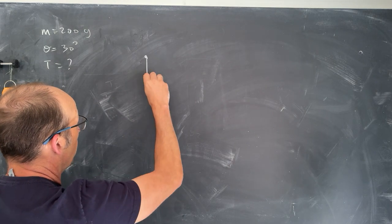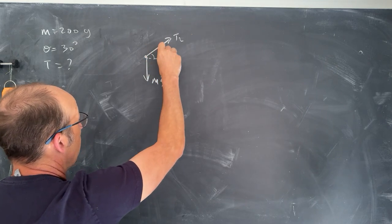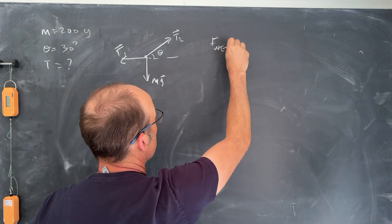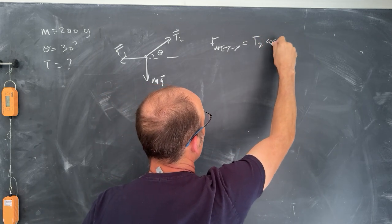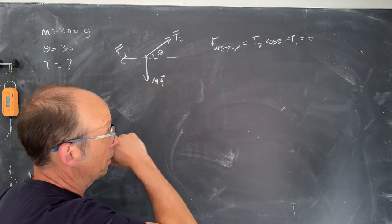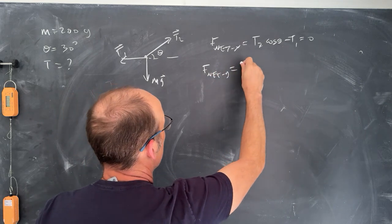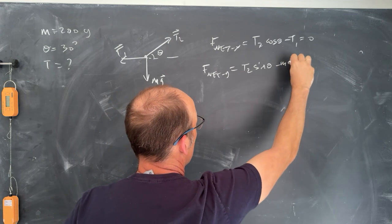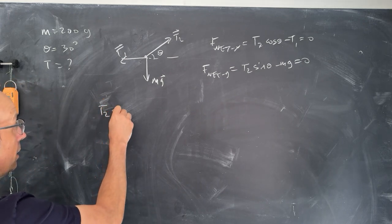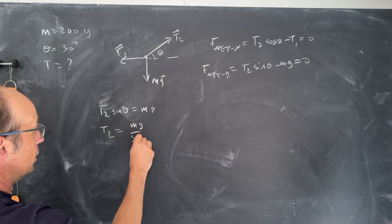I have mg. I have, let's call this t2 theta t1. So f net in the x direction, it's going to be t2 cosine theta minus t1 equals zero. I don't know t1, I don't know t2. I do know theta. Now in the y direction, I get f net in the y direction is t2 sine theta minus mg equals zero. And it's again equal to zero because it's at rest. Now I can solve for t2.